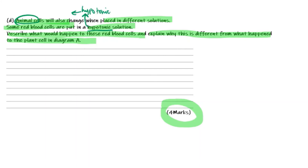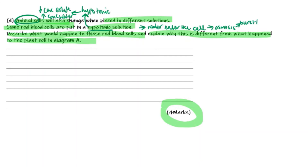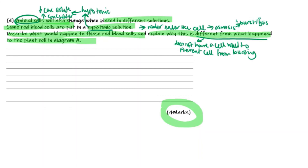The question is about animal cells in a hypotonic solution. Hypotonic has less concentration of solute and more concentration of water. This means water will enter the cell by osmosis. Because this is an animal cell, this will make the cell burst or cause lysis. The cell bursts because an animal cell does not have a cell wall like a plant cell does, so it cannot protect the cell from bursting.